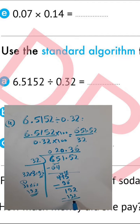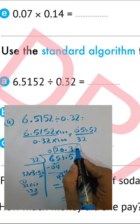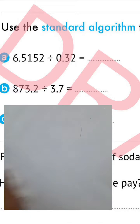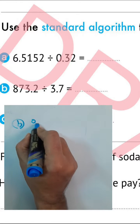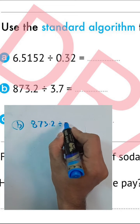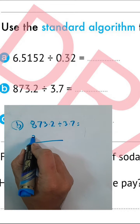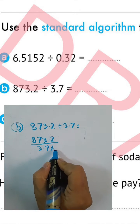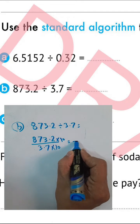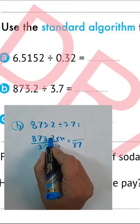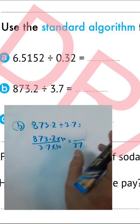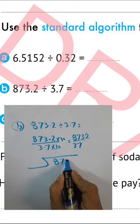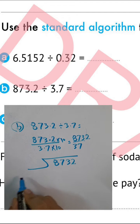The result is 20 and 36 hundredths. That is the result for question letter B. Next: 873.2 divided by 3.7. We can write 873.2 in the numerator and 3.7 in the denominator. First step: cancel the point in the denominator by multiplying by 10. Write 37 in the denominator and move the point in the numerator right-hand side by one place, giving 8732 over 37.